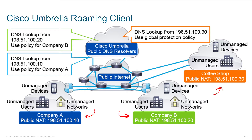Even when you travel to other locations with the same device and do those lookups, your public IP address is going to change. But even though it's changing, we still know that it's you. Typically, when we set up Umbrella at a particular site, we force all traffic to go through a router, so everybody's traffic is protected. When traffic leaves that router, it all comes from the same public IP address, so we know which IP addresses go with which users.